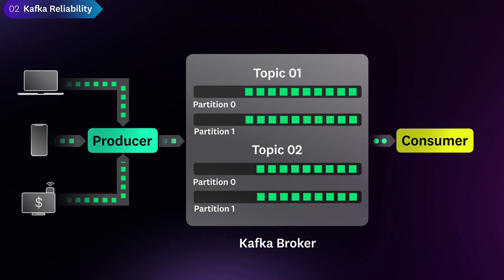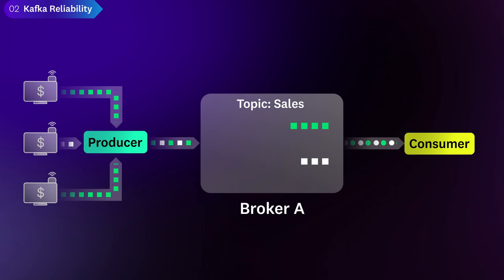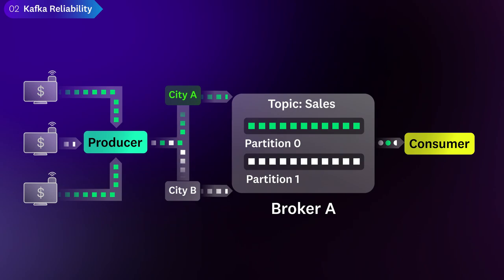Kafka also uses a unique system of partitioning and replicating messages to support highly reliable data streaming. Let's look at a real-world example — a sales data stream for a retailer. The retailer's point-of-sale machines generate an event for each transaction. Producer applications continuously feed these sales messages into Kafka. A Kafka broker writes the messages to a topic called sales, but instead of every sale being written to a single log file, the topic is partitioned based on some key, such as the city in which the sale occurred. The retailer configures the producer to route messages according to this key.